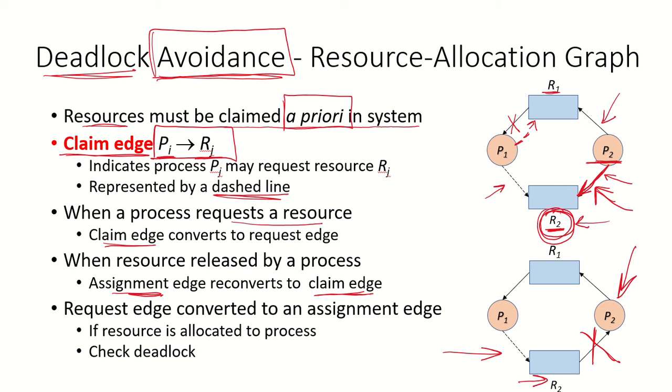Had the allocation not resulted in a cycle, then the resource would be allocated to the process. This is how resource allocation graphs can be used for deadlock avoidance.